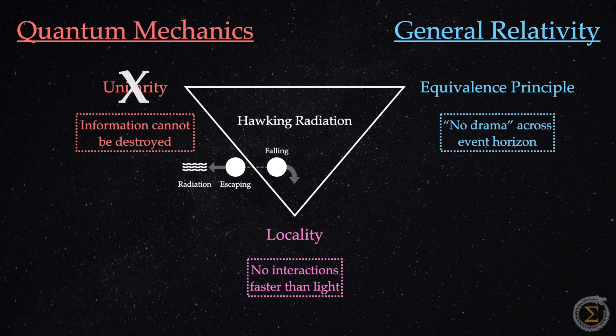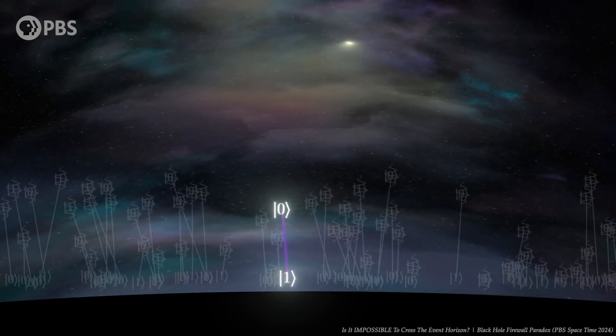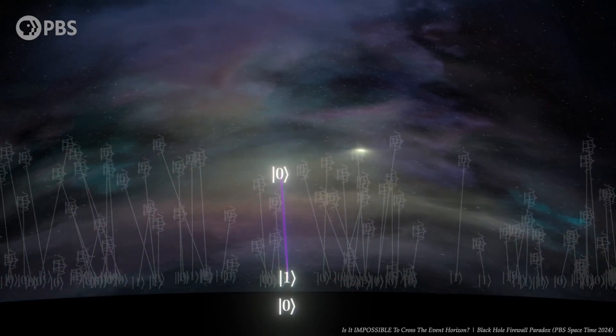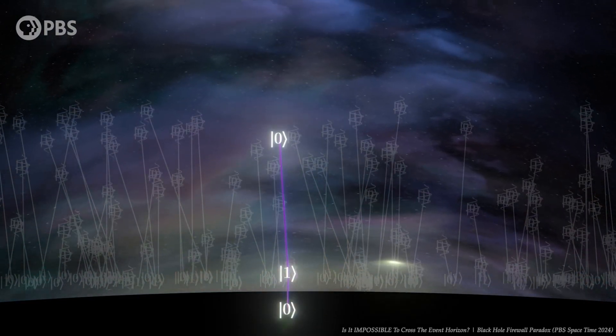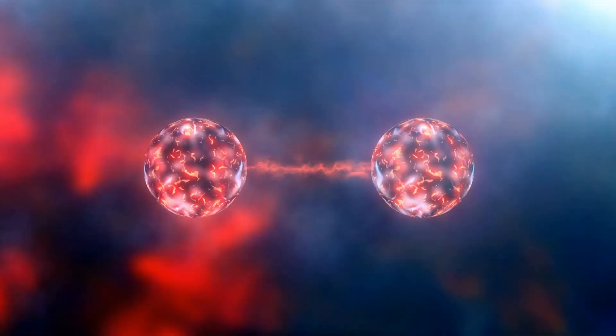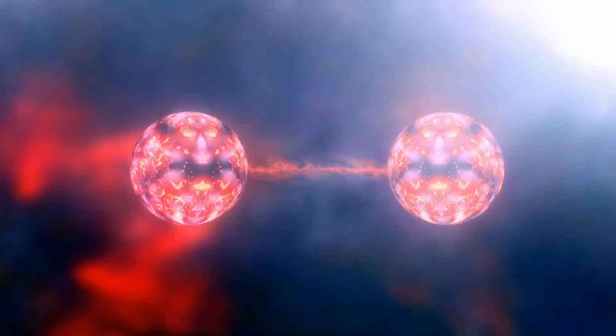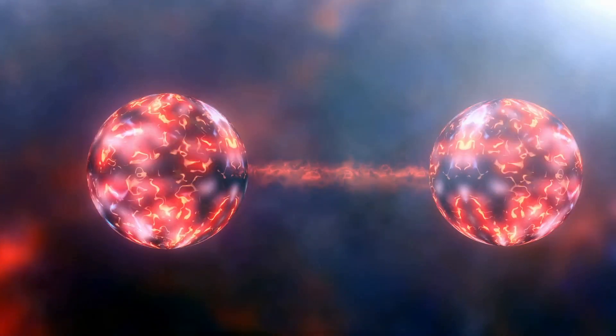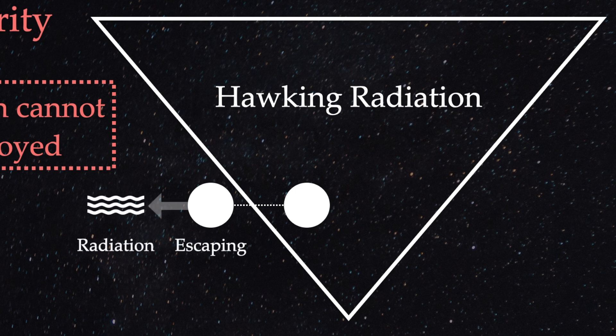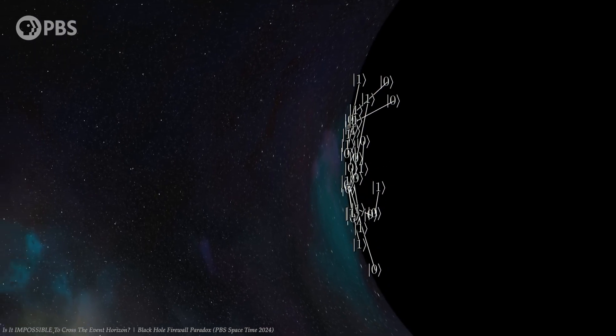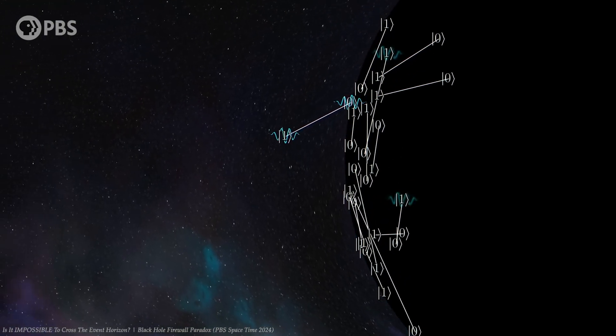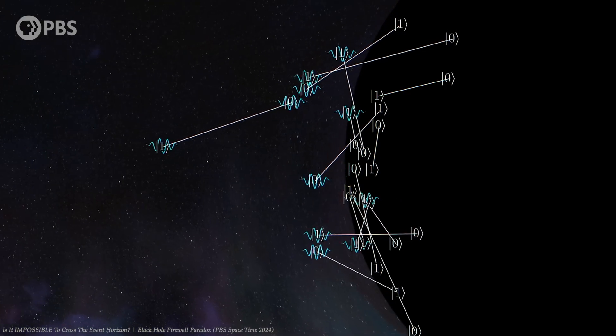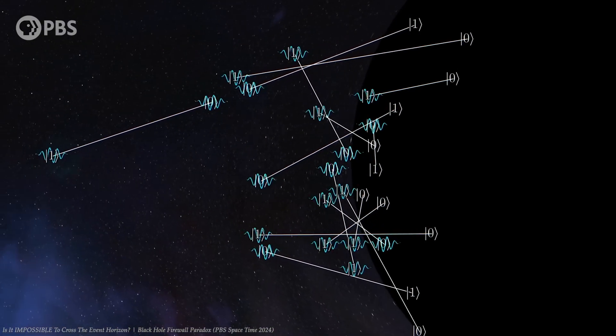Quantum mechanics insists that this information must be preserved. But if we attempt to preserve unitarity by assuming the Hawking radiation carries information, we run into problems with the equivalence principle and locality. Quantum mechanics requires that the Hawking radiation be entangled with the particles that form the virtual pairs in order for unitarity to hold. For the radiation to carry information, it would need to be entangled with the interior of the black hole. This would maintain the smooth, no-drama passage through the event horizon predicted by GR.